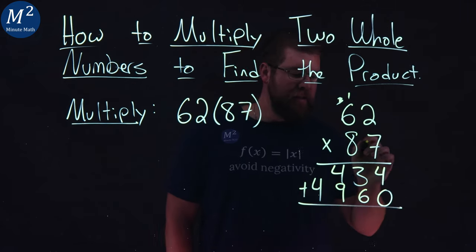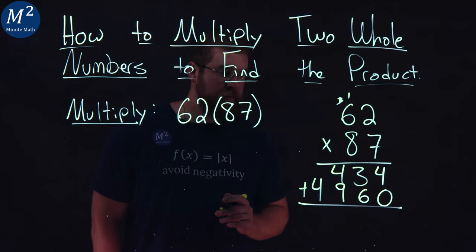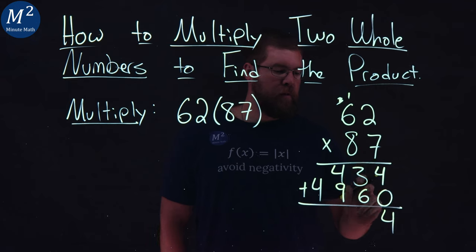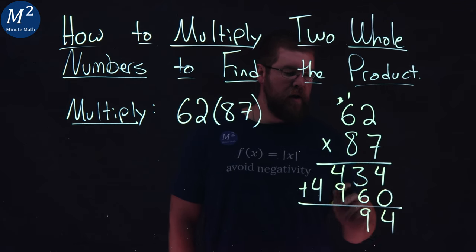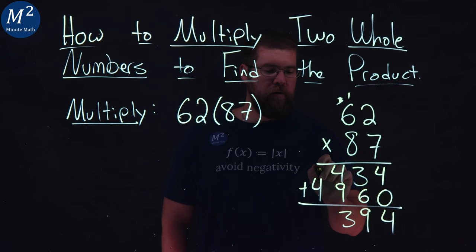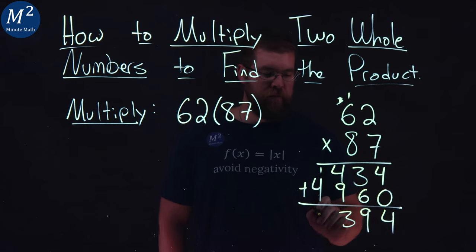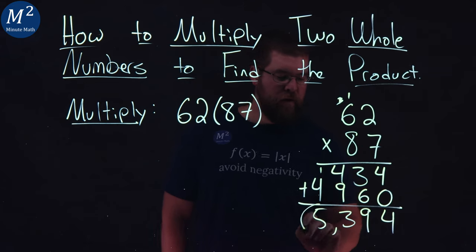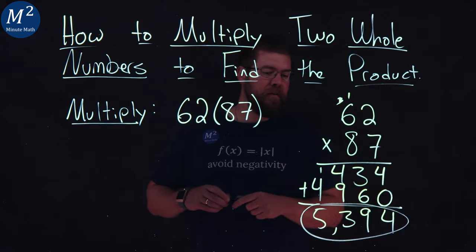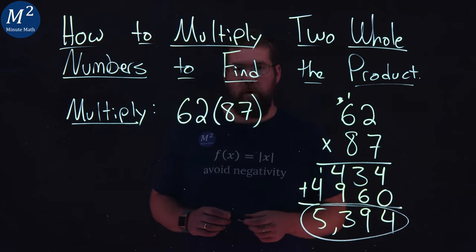Now we want to add these two numbers together. Four plus zero is four. Three plus six gives me nine and four plus nine is 13. So we have a three, carry the one and one plus four is five.